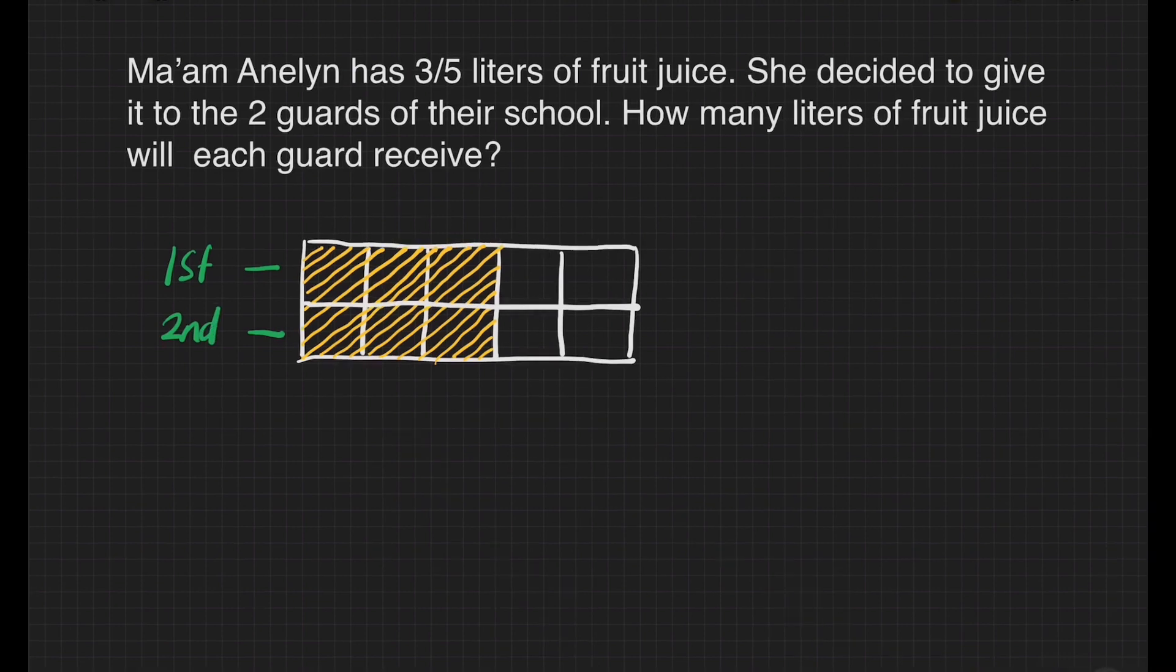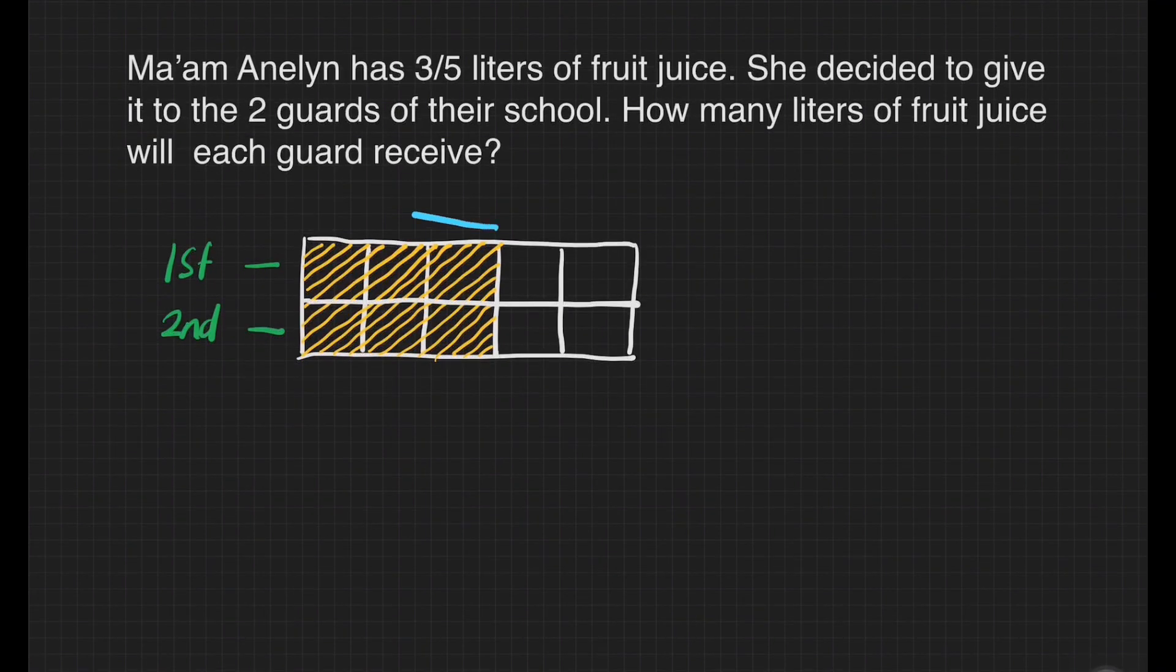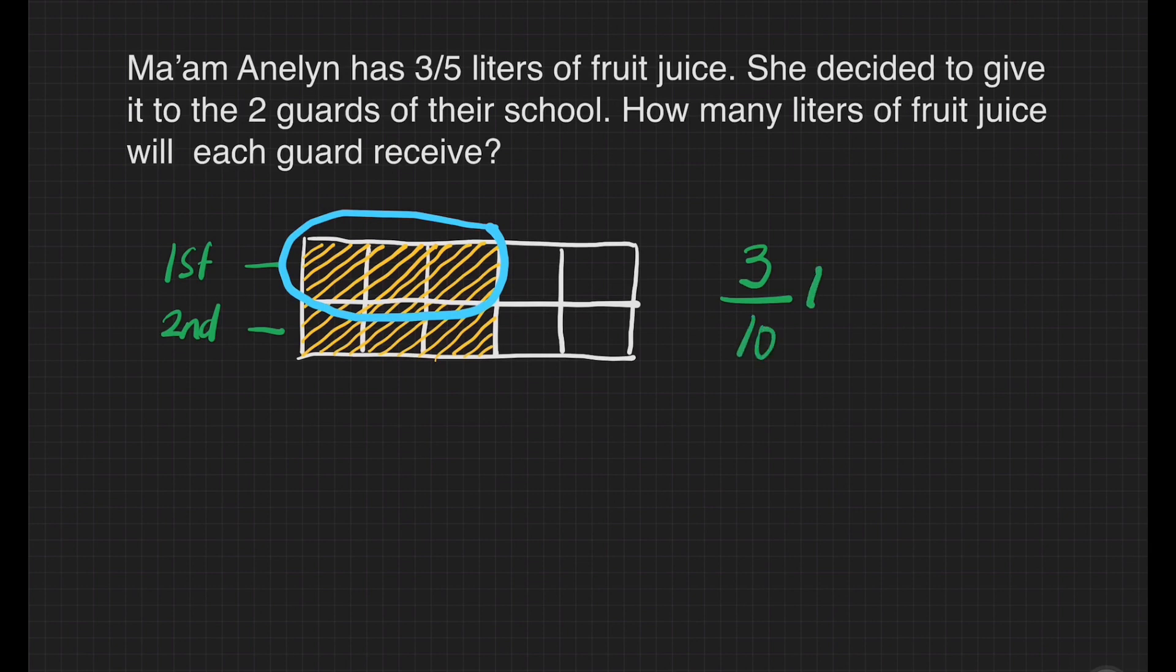The question now is how many liters will each guard receive and that will be this part, the one that I'm circling right now. That is 3 shaded parts out of 10 equal parts because the whole is divided into 10 equal parts. Our answer is 3 tenths liters and that's it.